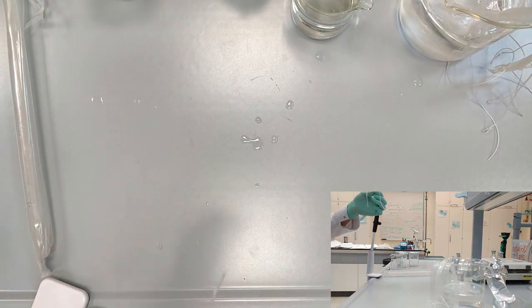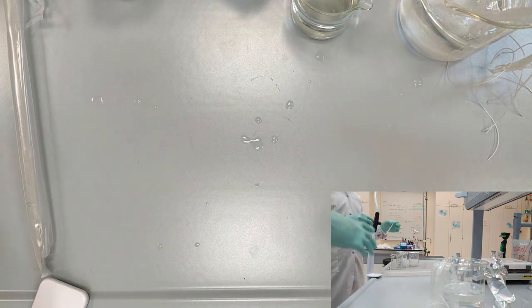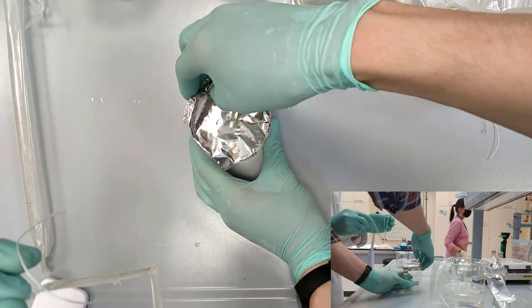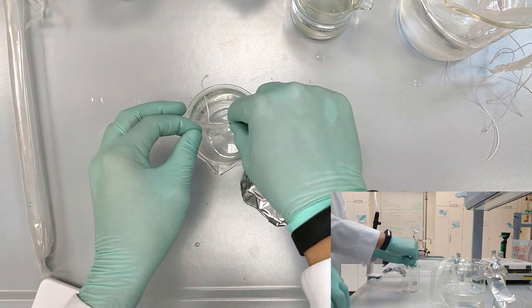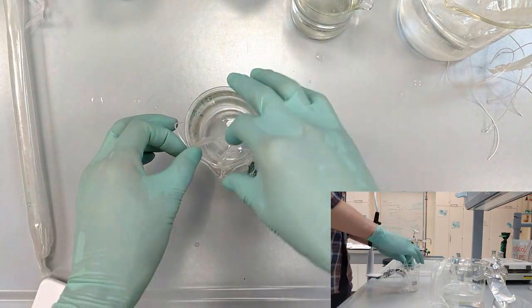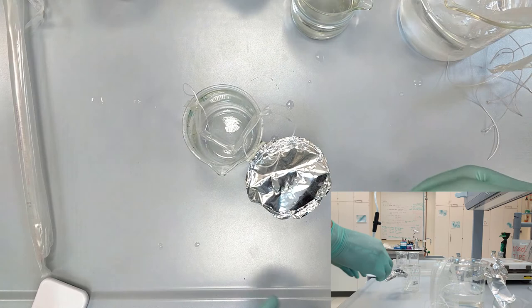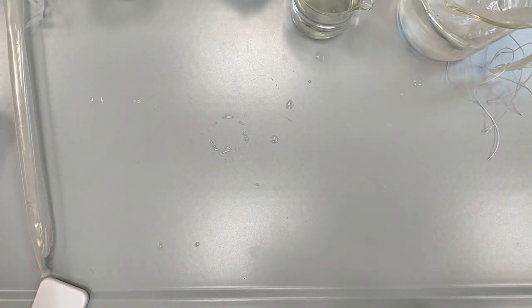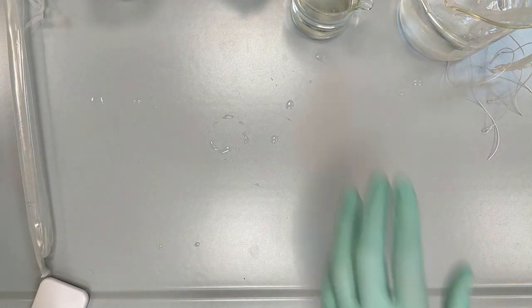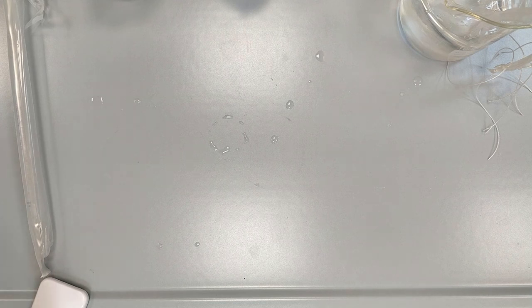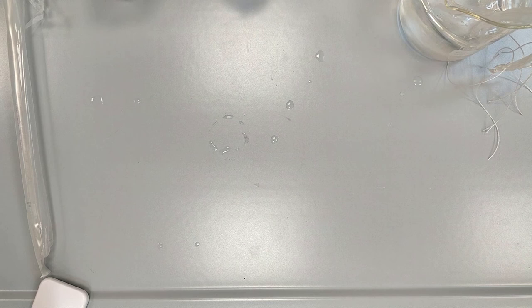After clipping this side, we are going to weigh this dialysis tube and write down the mass for further calculations. So put it inside the beaker for now, bring the scales, dry the dialysis tube before that and determine the mass.